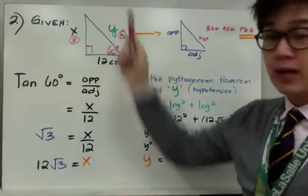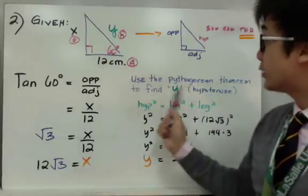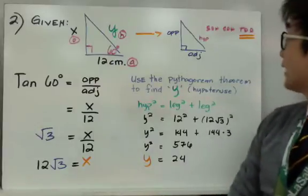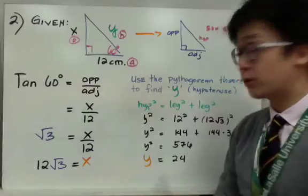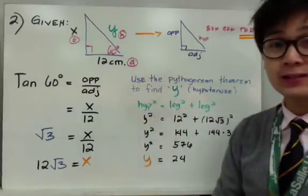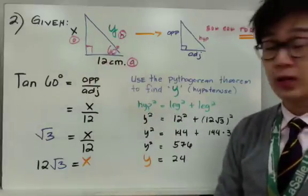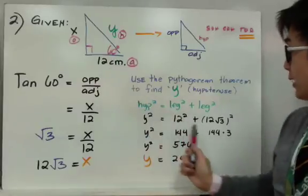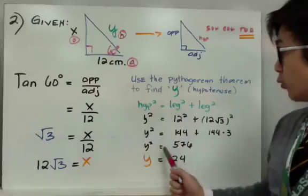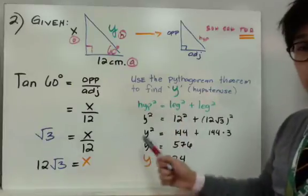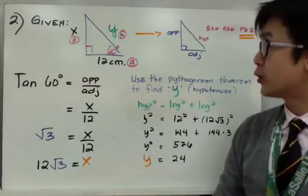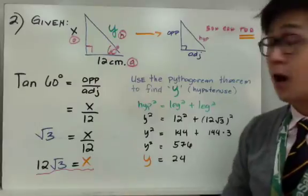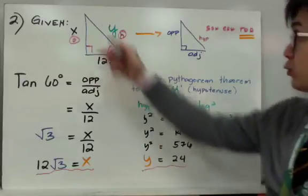Now the only remaining side to find is the hypotenuse, y. I'm going to use the Pythagorean theorem. You could alternatively use cosine = adjacent/hypotenuse and still get y = 24. Using the Pythagorean theorem: y² = 12² + (12√3)², which gives y² = 144 + 432 = 576. Taking the square root of both sides gives y = 24. So the missing sides are x = 12√3 centimeters (opposite) and y = 24 centimeters (hypotenuse).